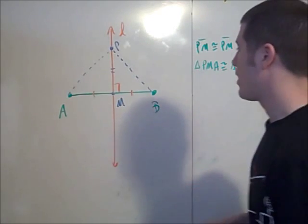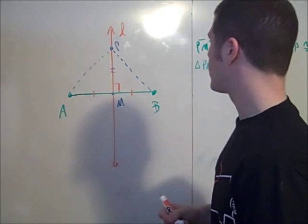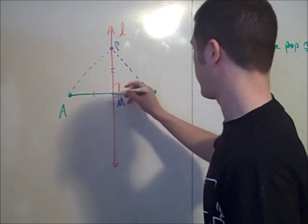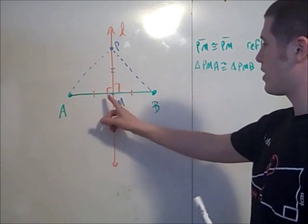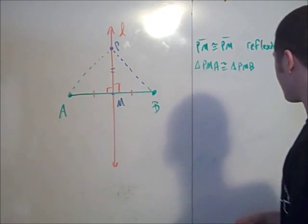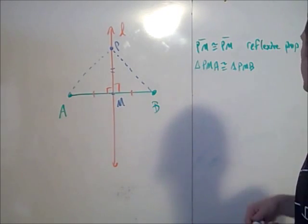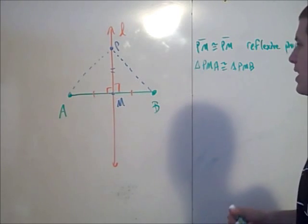So we know that perpendicular lines intersect at four right angles. That's a theorem that you can prove fairly early on. So this is a right angle here as well. So PMA is congruent to PMB, and that's by side-angle-side.